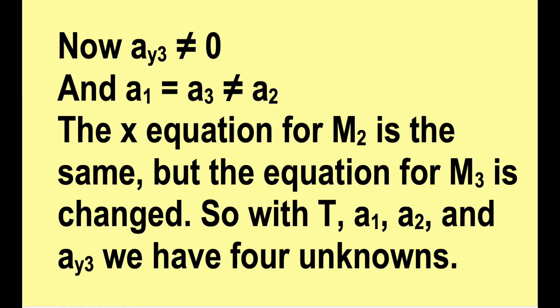Now a sub y3 is not zero. a1 still equals a3, but they do not equal a2. The x equation for m2 is the same, but the equation for m3 is changed. So with tension, a1, a2, and ay3, we have four unknowns. We'll need four equations to solve that.